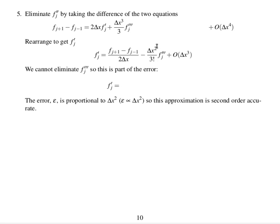You can see that the error is now proportional to delta x squared. So, we're writing that as order delta x squared. So, this is a second order accurate approximation.